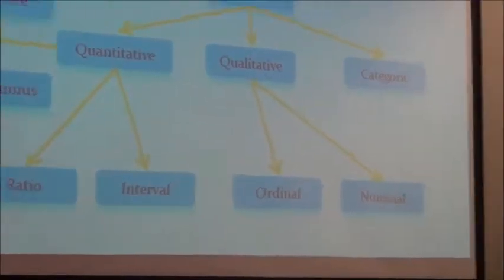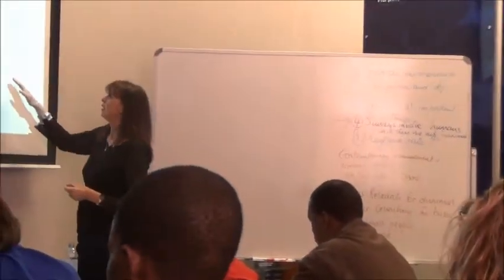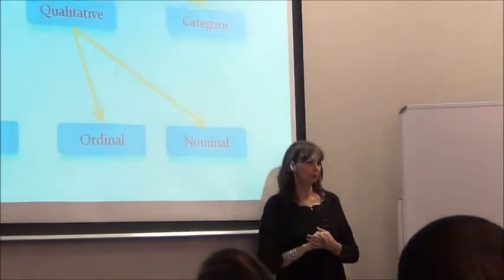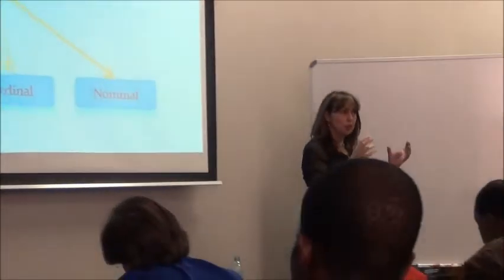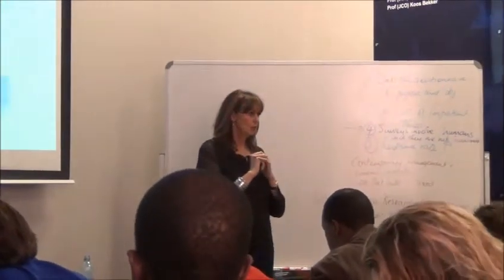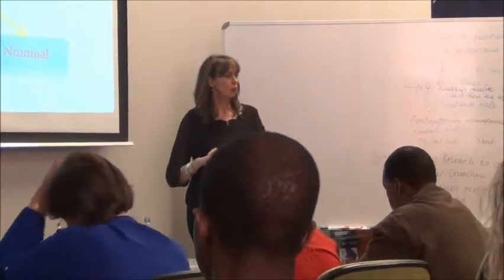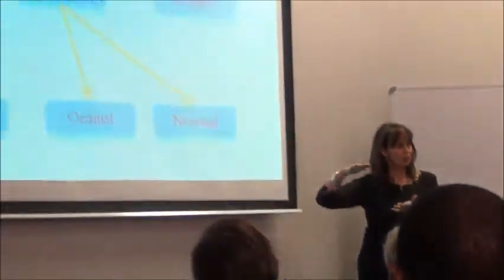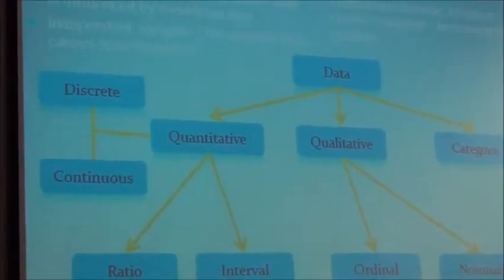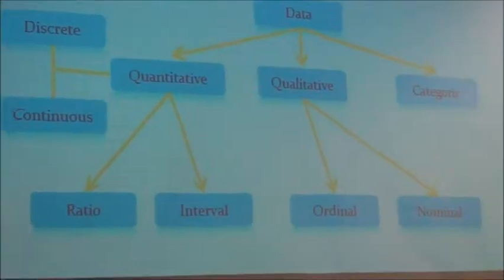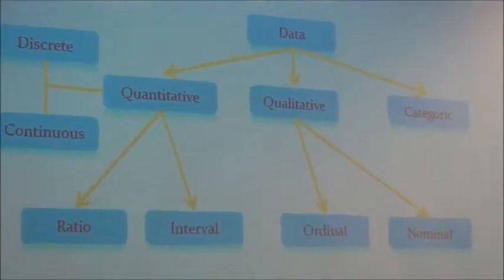Second one is ordinal data. Slightly better than nominal data, but it still falls on your qualitative data. In ordinal data, you have categories. You still don't have actual numbers, but at least you have categories. So you could say first degree, second degree, third degree. There's like a level, a categorization of the data. We still can't do more than just counting how many in each category, but there's a sense of improvement or ranking order in the data.